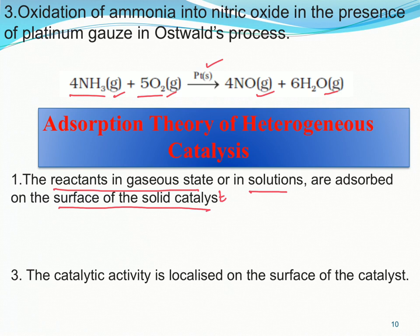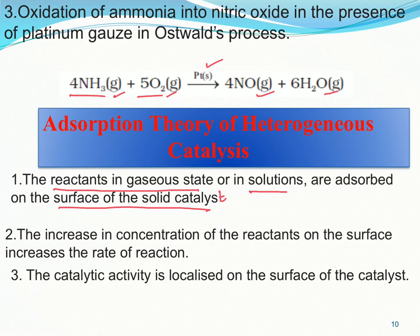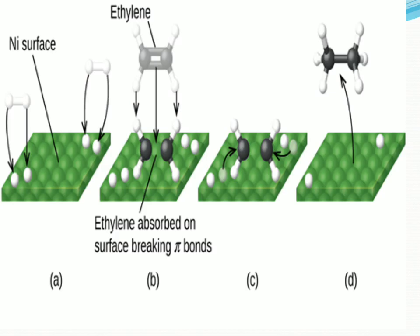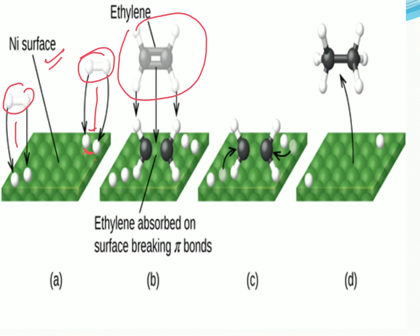The reactants in the gaseous state or in solution are adsorbed on the surface of the solid catalyst। यानि जो reactant gaseous state में होगा या solution में होगा, वो catalyst के surface पर adsorbed होगा। जब वो adsorbed होगा तो reactant का concentration surface पर increase होगा, जिससे rate of reaction increase होगी। The catalytic activity is localized on the surface of the catalyst। Now look at this figure — green color में nickel surface है, और white molecules हैं जो adsorbed hydrogen molecules हैं।